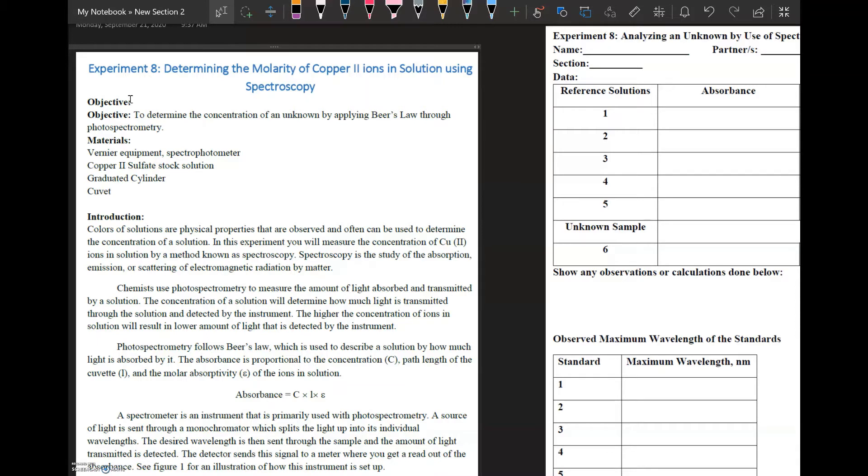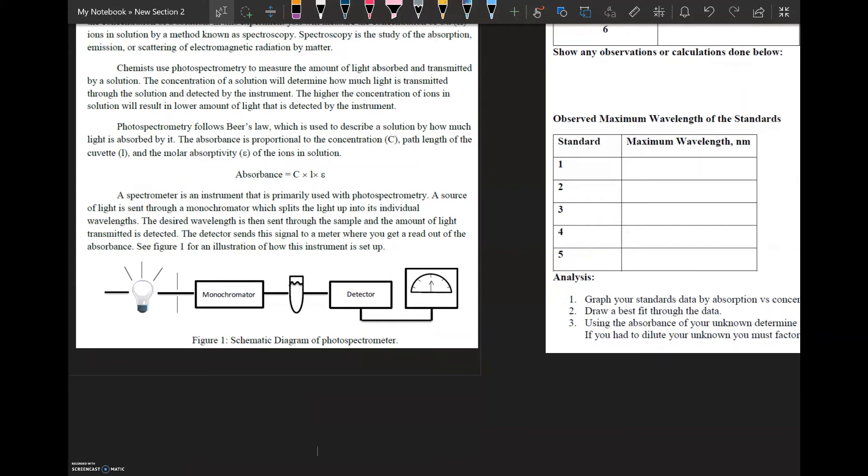Spectroscopy is a technique that we use to send light through a solution. On the other side of the light, there is a detector, kind of like your eyeballs. It detects how much light comes out the other side. This diagram that we're looking at on the bottom of this page, we can see a light bulb. It shines light through a monochromator, which basically singles out a specific wavelength. And that light then passes through the solution and into the detector.